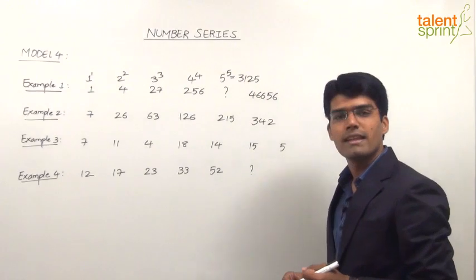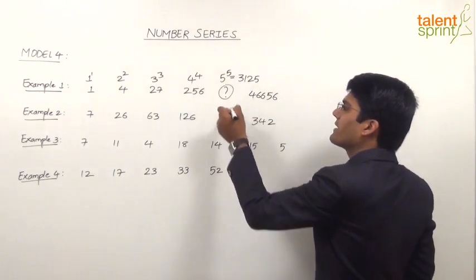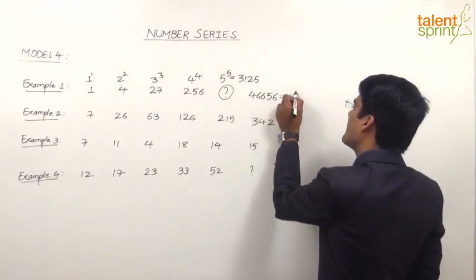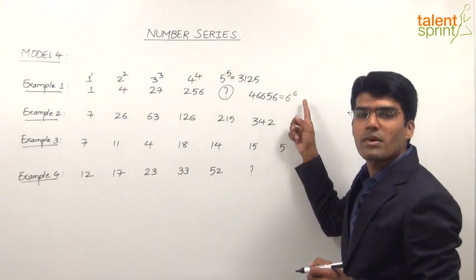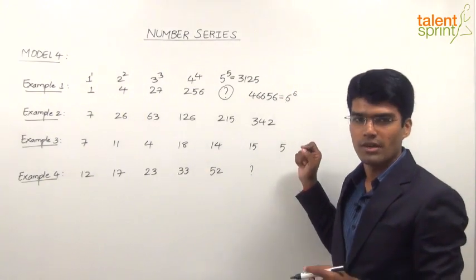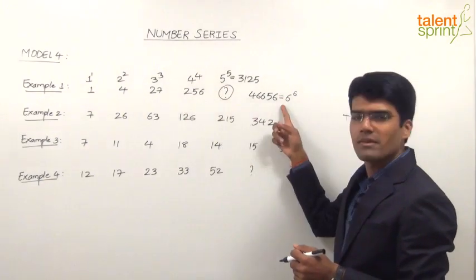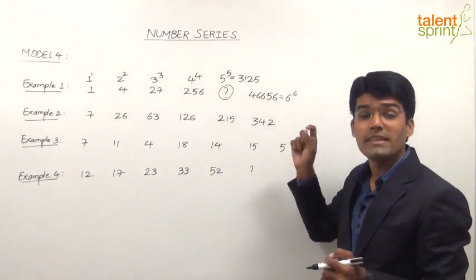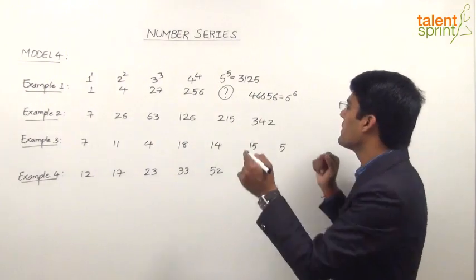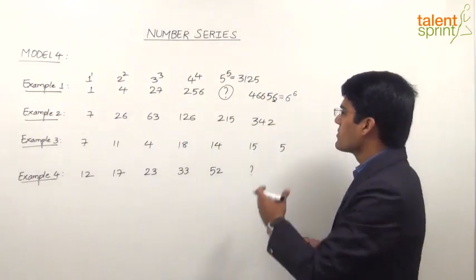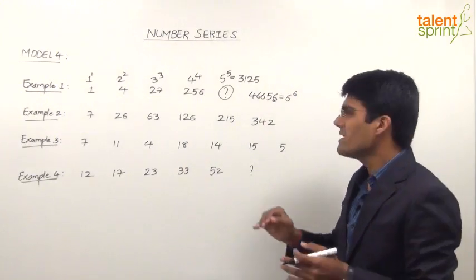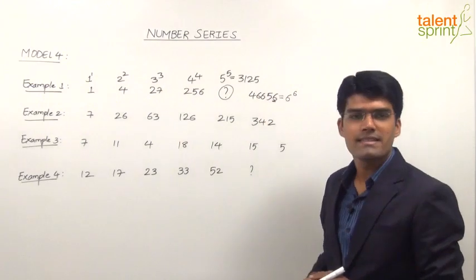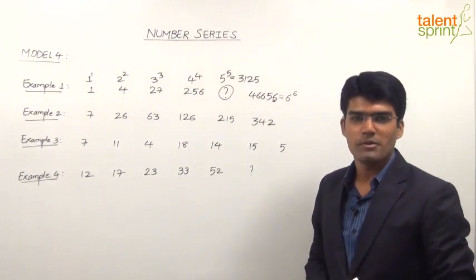This 46656 obviously has to be 6 power 6. We need not verify whether 6 power 6 is 46656 or not. If this is the pattern, next one has to be 6 power 6 and that can be justified by checking the units place. Any power of 6 will be ending in 6 and this number here also ends in 6. Let us not waste time checking. The answer is 3125, that is 5 power 5.